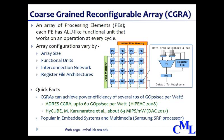While CGRAs can certainly accelerate even highly parallel loops, the main potential of CGRAs that we are interested in exploiting is that CGRAs can accelerate loops with low parallelism — such as loops featuring loop-carried dependencies, loops with high branch divergence, or loops with low trip counts.